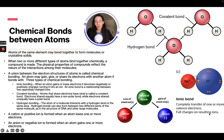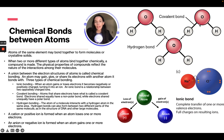In an ionic bond, there is a complete transfer of one or more valence electrons — sodium loses its electron to chloride — resulting in full charges on the resulting ions: a positive and a negative. In a covalent bond, atoms share electrons. Electrons shared equally form a nonpolar covalent bond, while electrons shared unequally form a polar covalent bond. The hydrogen-oxygen bond in water is an example of a polar covalent bond.